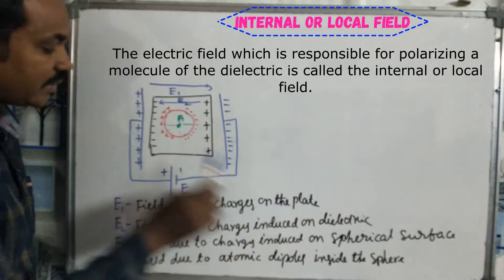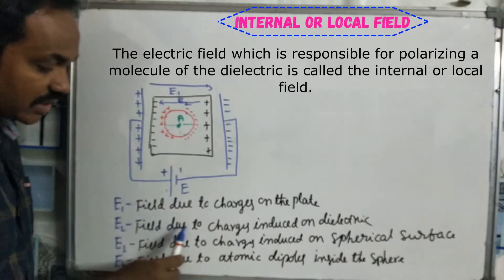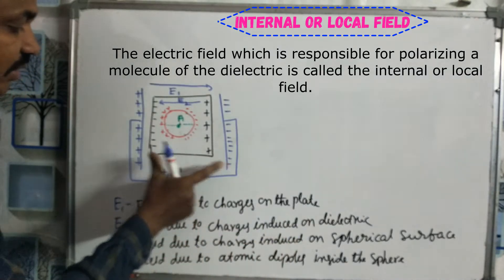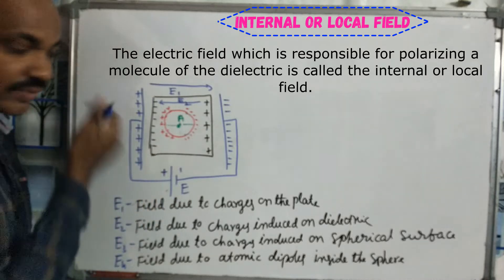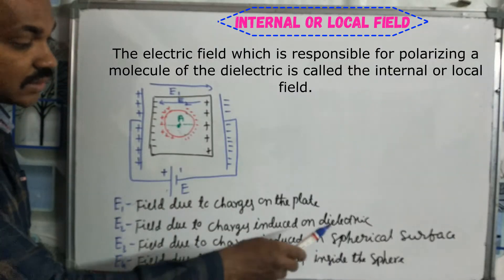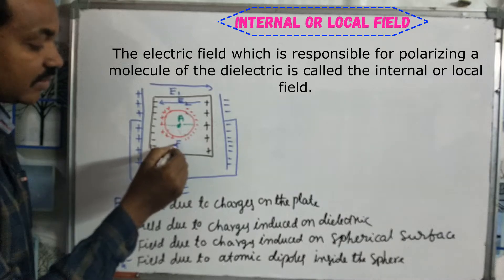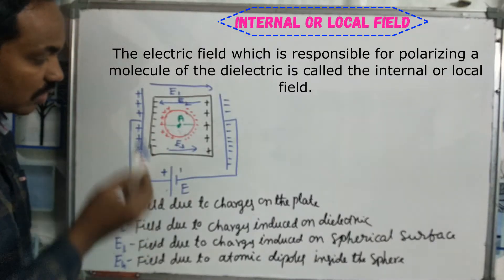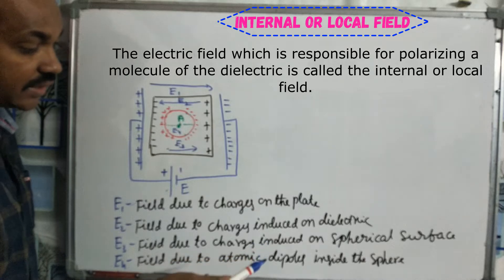E1 is the field due to the charge on the plate. E2 is the field due to the induced charge on the surface. E3 is the field due to the charge induced on the spherical surface. E4 is the field due to the atomic dipoles inside the sphere.